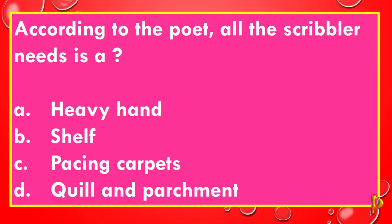According to the poet, all the scribbler needs is: A: Heavy hand. B: Shelf. C: Pace and carpets. D: Quill and parchment. The correct answer to this question is D, quill and parchment.